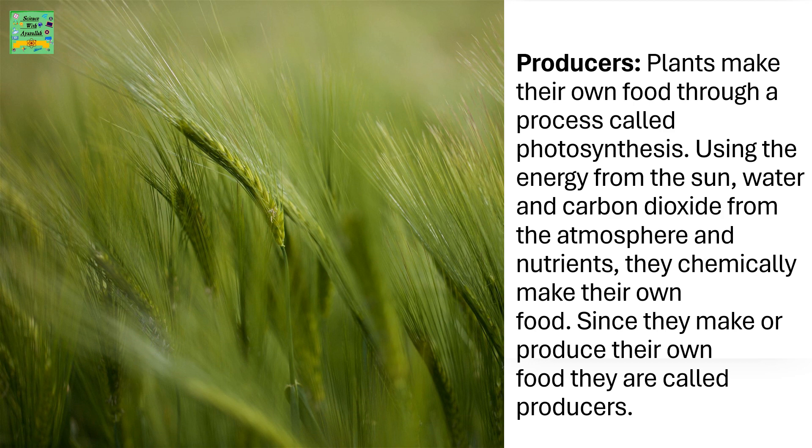Producers: plants make their own food through a process called photosynthesis. Using the energy from the sun, water and carbon dioxide from the atmosphere and nutrients, they chemically make their own food. Since they make or produce their own food, they are called producers.